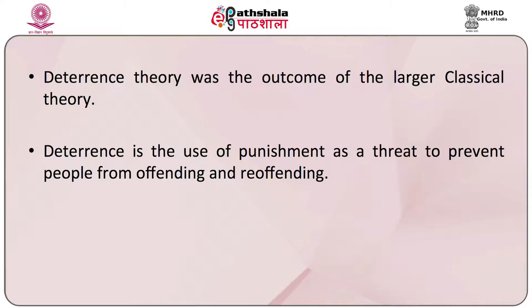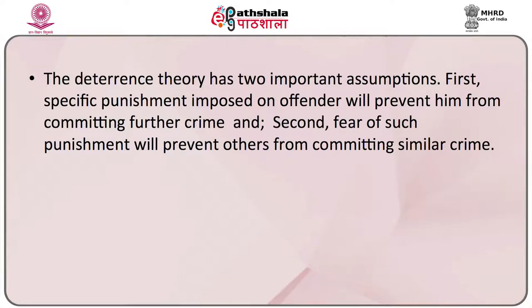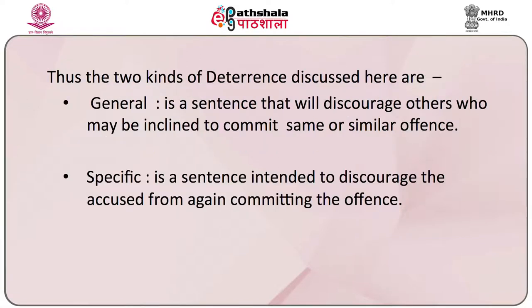The deterrence theory was the outcome of the larger classical theory. Deterrence theory is the use of punishment as a threat to prevent people from offending and re-offending. It has two important assumptions: first, specific punishment imposed on an offender will prevent him from committing further crime; and second, fear of such punishment will prevent others from committing similar crime. The two kinds of deterrence are general and specific. General deterrence is a sentence that will discourage others inclined to commit the same or similar offence.